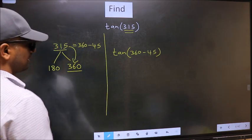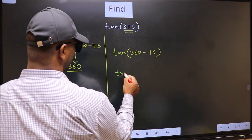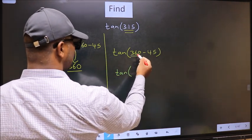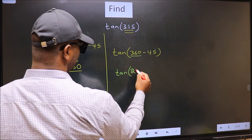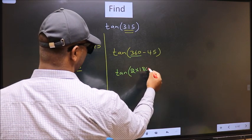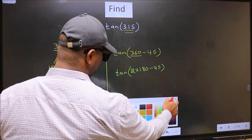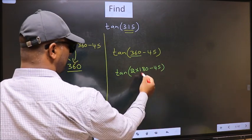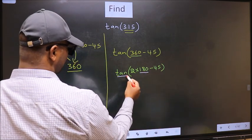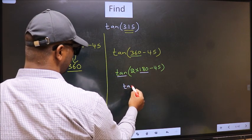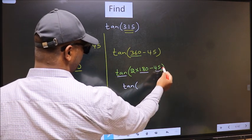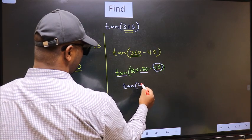Next, tan. In place of 360, now we should write 2 times 180 minus 45. Next, here we have 180. So tan is not going to change. It will remain tan. And inside, we get this angle 45.